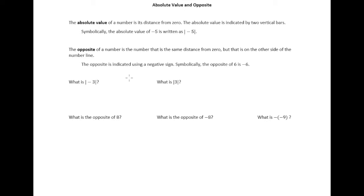Let's make sure we understand these definitions. It says what is the absolute value of negative 3? Well, the absolute value of negative 3 is just its distance from zero. Negative 3's distance from zero—distance is always a positive quantity—so that would just be 3.